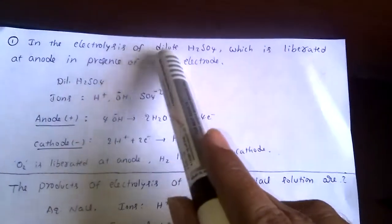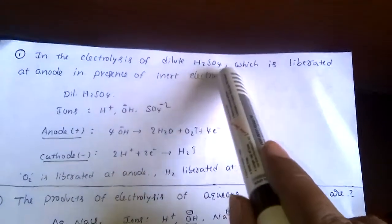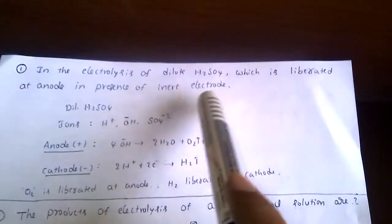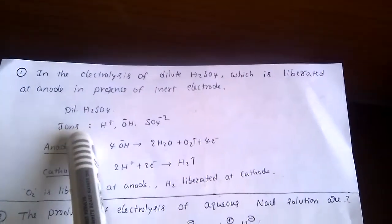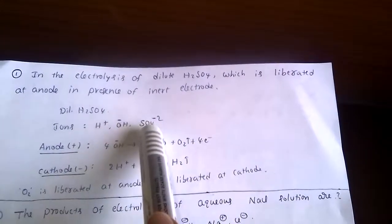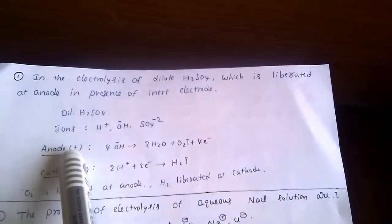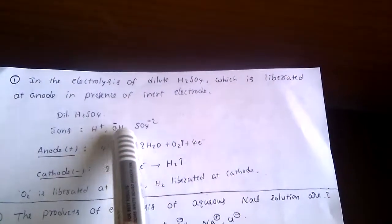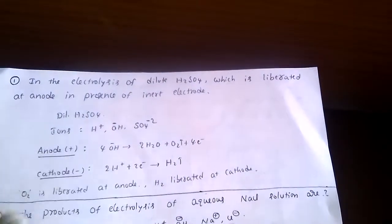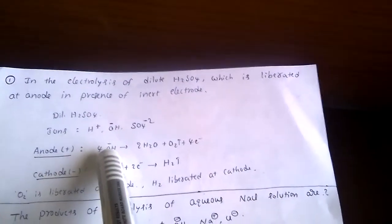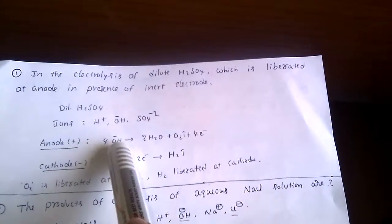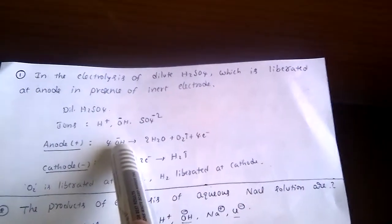In the electrolysis of dilute H₂SO₄, which is liberated at the anode in presence of inert electrodes? Dilute H₂SO₄ contains ions: H⁺, OH⁻, and sulfate ion. At the anode (positive), OH⁻ and sulfate ions move towards it. Which ion discharges depends on the discharge potential — the ion with less discharge potential discharges first.